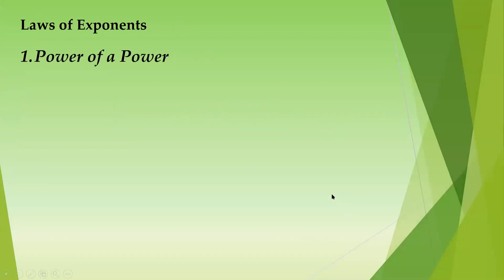The first law is power of a power. So, we have x raised to a, raised to b. You have a variable with a power, then raised to another power — that is power of a power. So, what you do is it equals x raised to a times b. You multiply the powers.